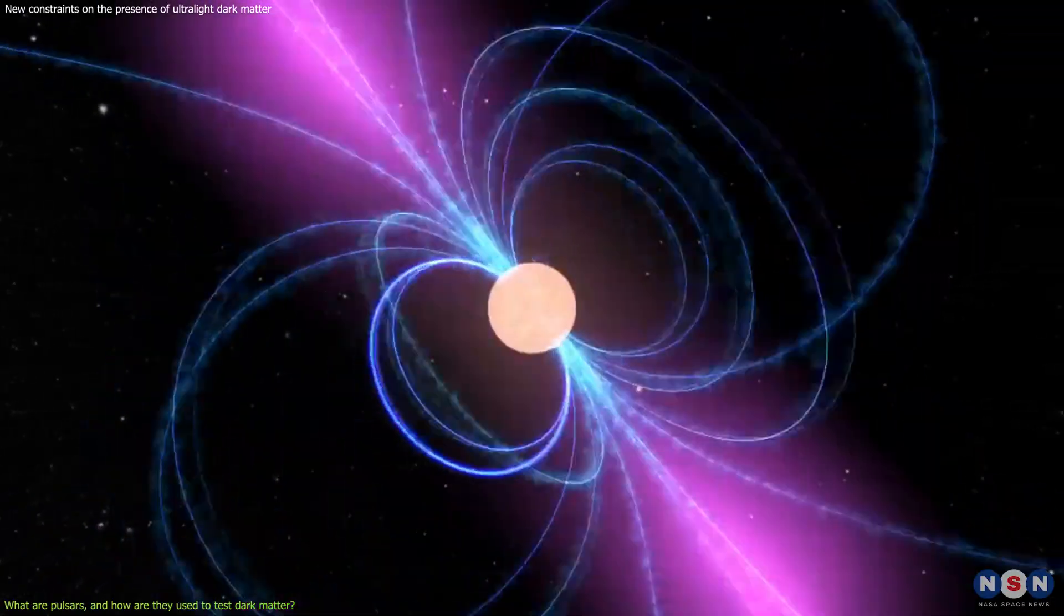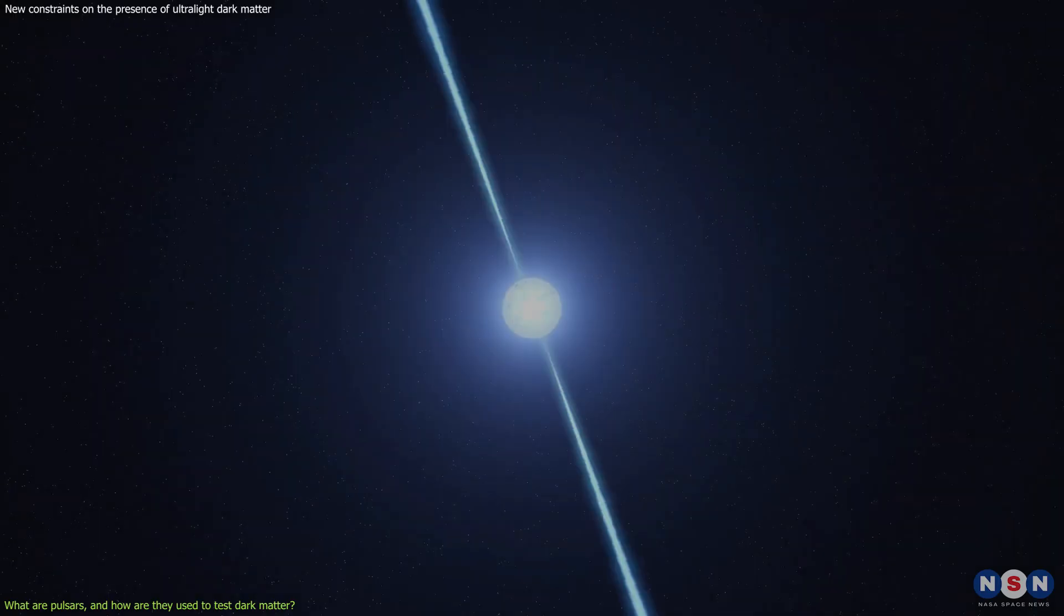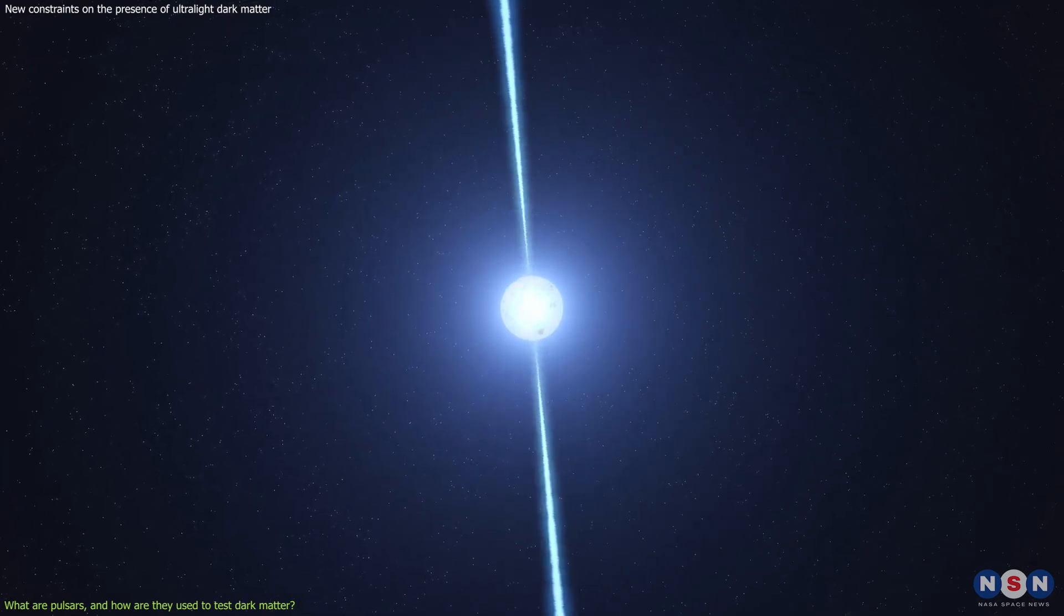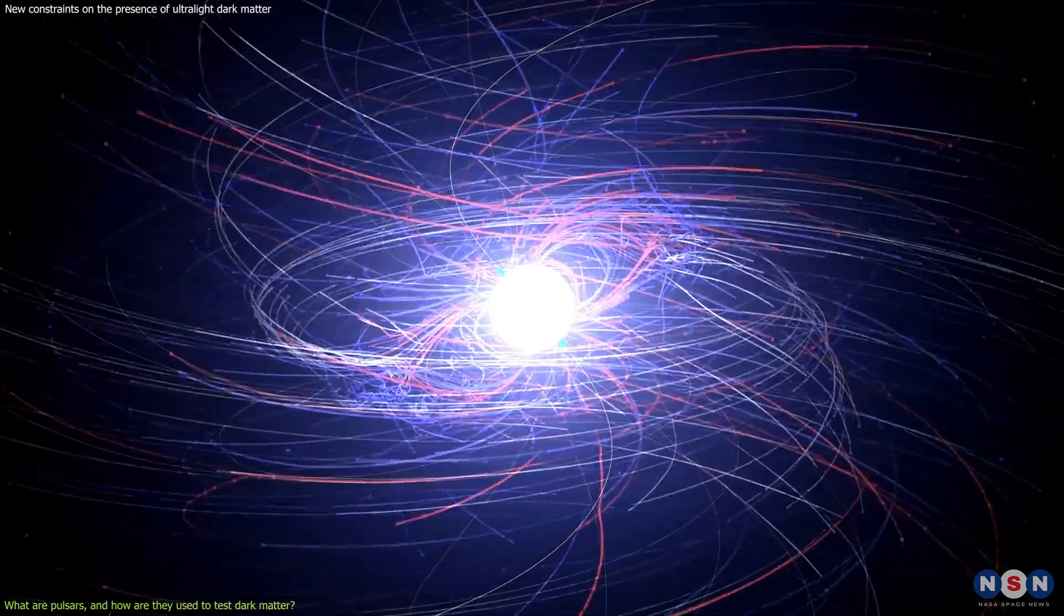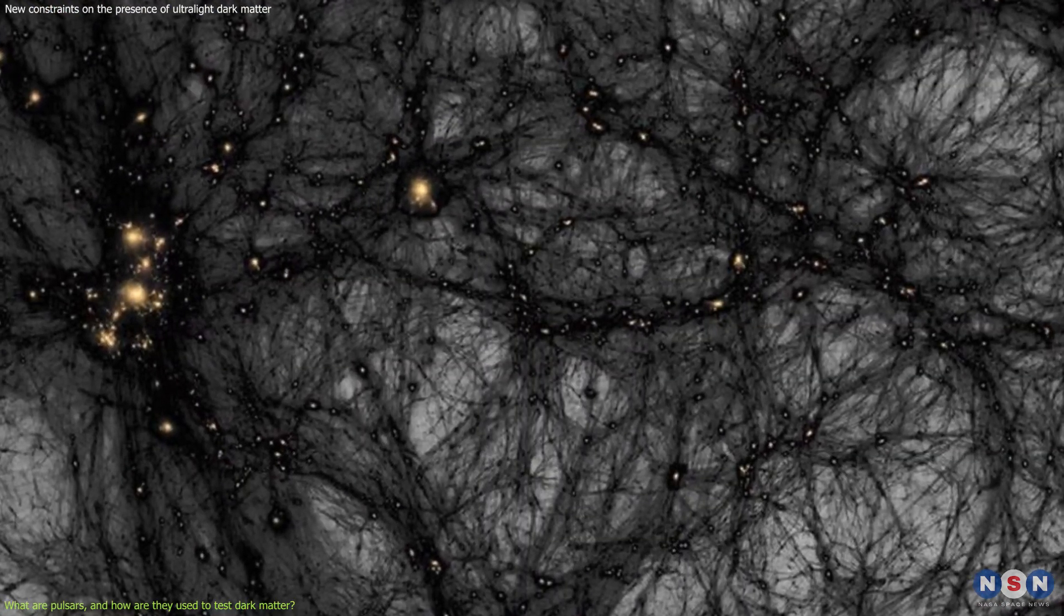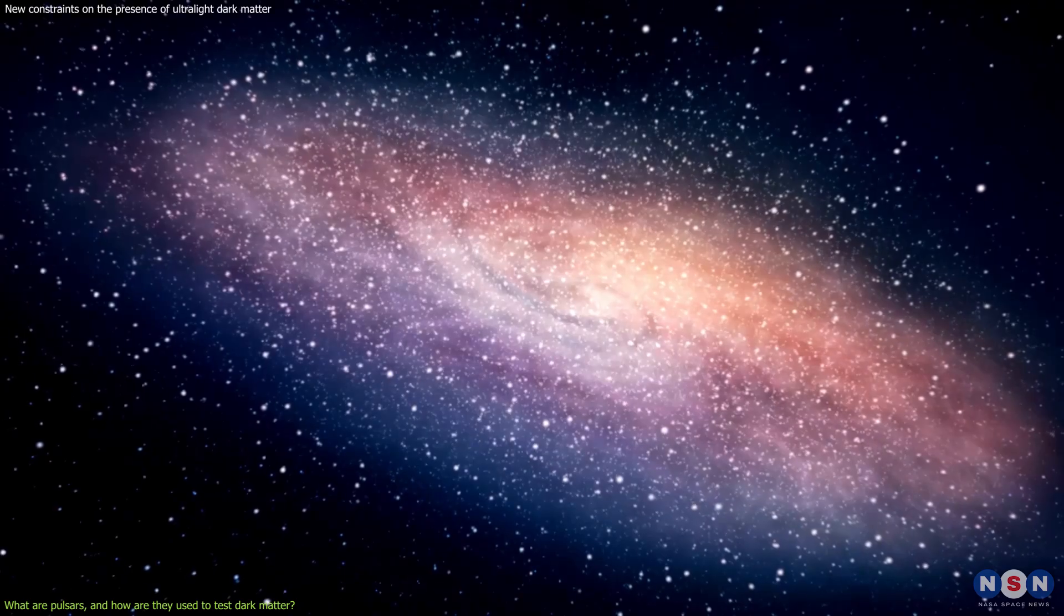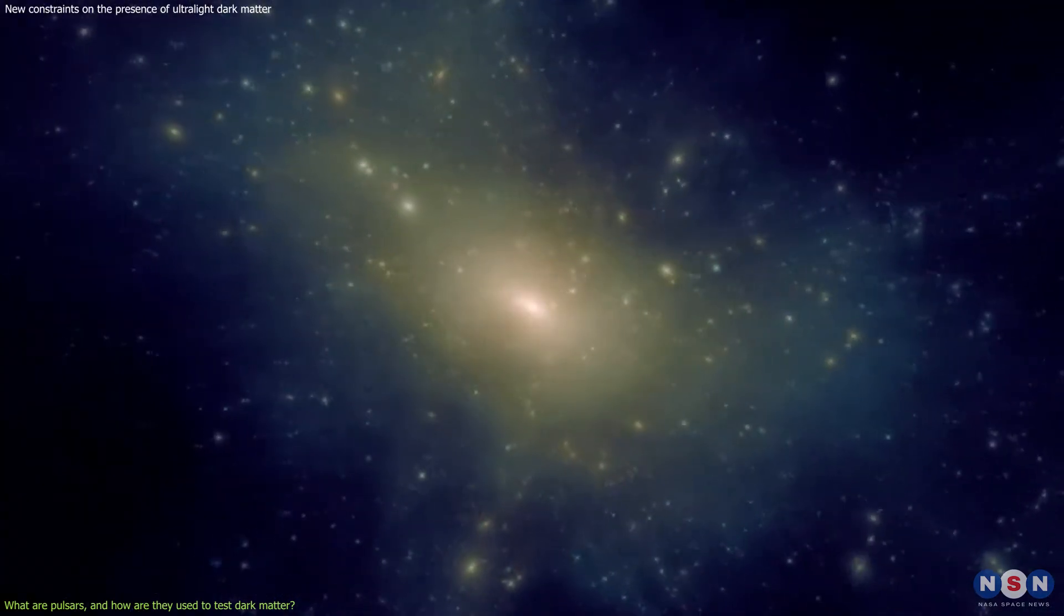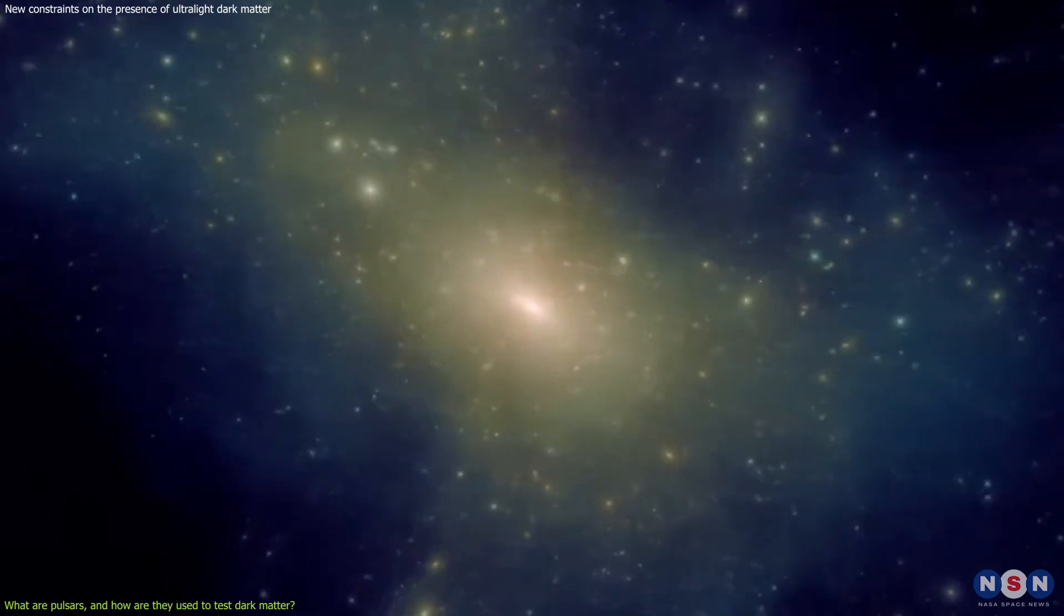But how can pulsars help us understand dark matter? Pulsars can also be affected by dark matter, which can alter their signals in different ways. For instance, if dark matter is composed of ultralight particles, these particles could form a large and diffuse cloud around the galaxy, called a dark matter halo.